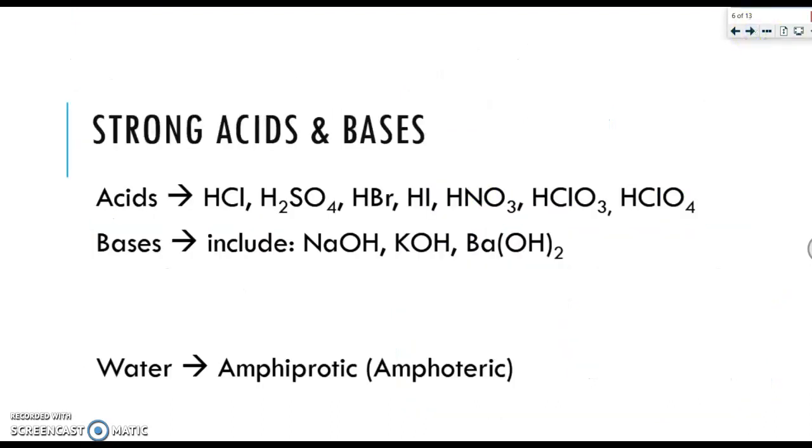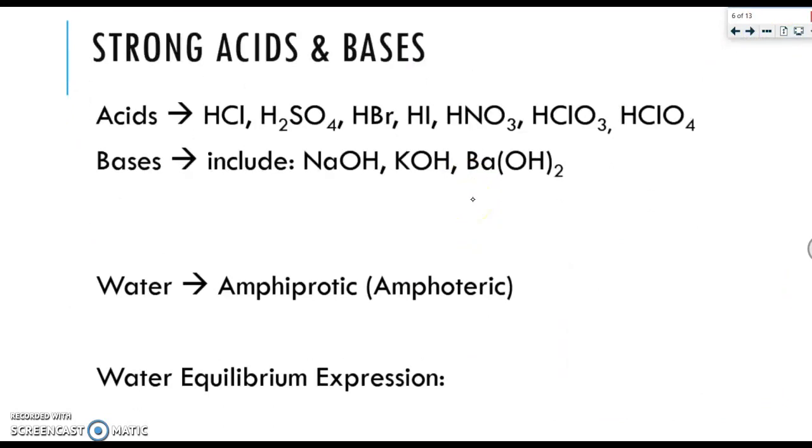So let's talk about what's strong and what's weak. For acids, we have seven. HCl, H2SO4, HBr, HI, HNO3, and then HClO3 and HClO4. Everything else is considered weak.